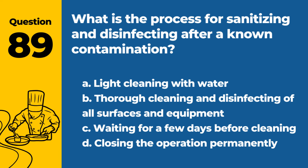Question 89. What is the process for sanitizing and disinfecting after contamination? a. Light cleaning with water. b. Thorough cleaning and disinfecting of all surfaces and equipment. c. Waiting for a few days before cleaning. d. Closing the operation permanently. Answer: b. Thorough cleaning and disinfecting of all surfaces and equipment. This is necessary to eliminate pathogens after contamination.